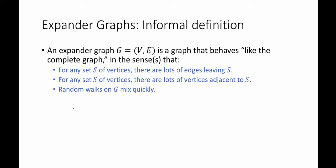First, in the sense that for any set S of vertices, there are a lot of edges leaving S. The second sense is that for any such set S of vertices, there are a lot of vertices adjacent to S.